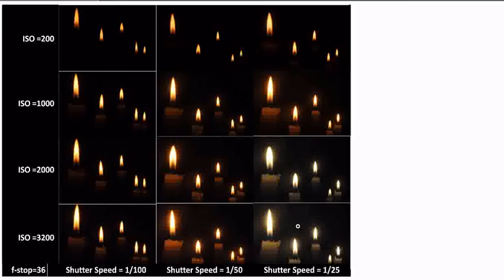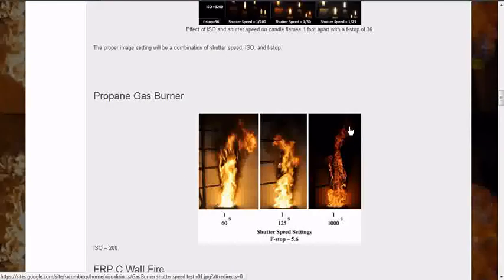ISO is basically an amplifier on the sensor in your camera. Anyone who's done data acquisition knows that if you amplify the signal too much, you not only amplify the data you're collecting, but you also amplify any noise that's in your data acquisition system. Since the sensor is basically just one big data acquisition unit, you're amplifying any noise that's on the sensor, any random voltage spikes or other things that happen in there.